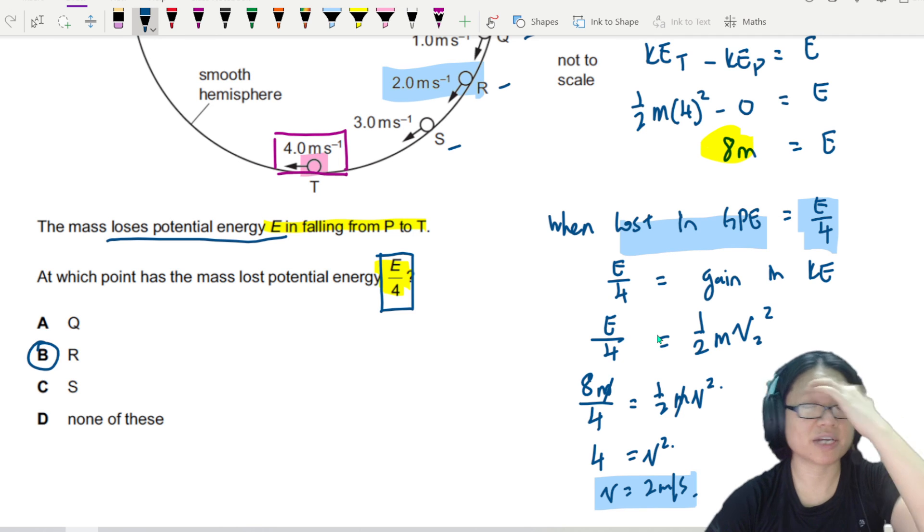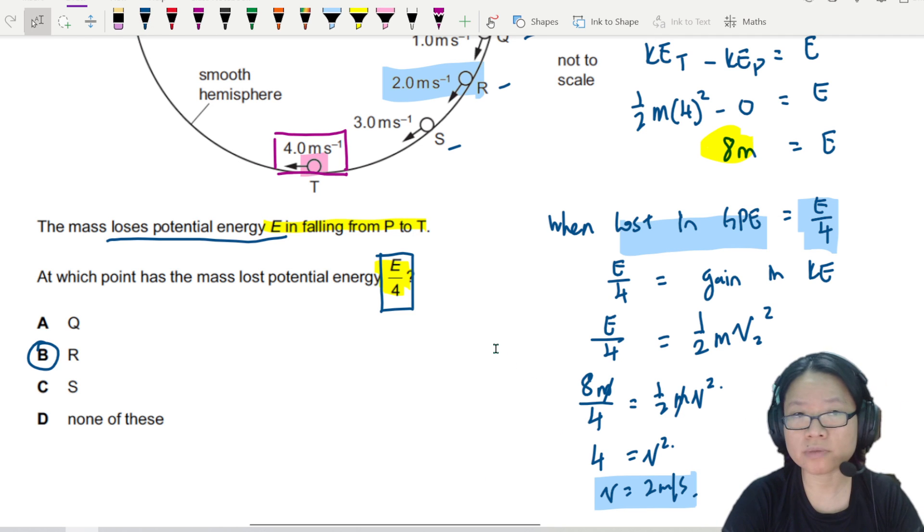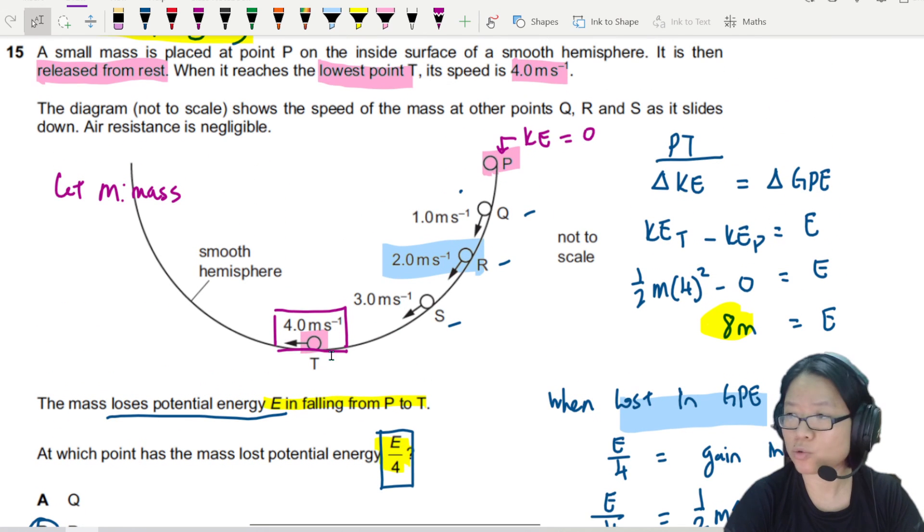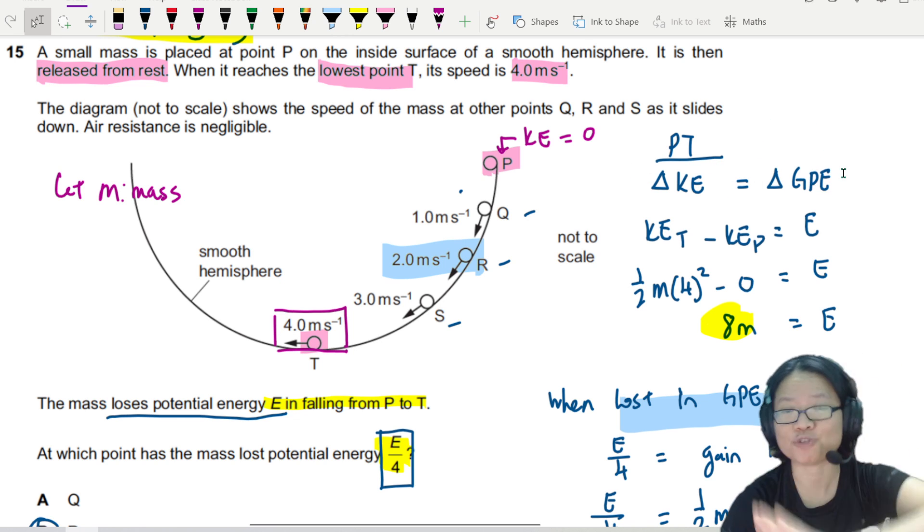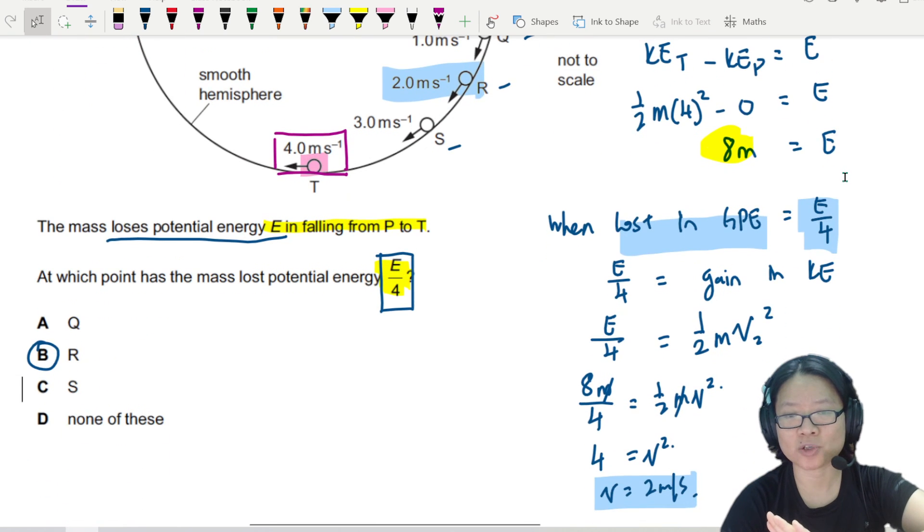Alright. So whenever you have this kind of variable situation, try to use the information that you have. For example, losing potential energy E when you fall from P to T. Once you have that potential energy change, you can equate that to KE. So we are still just playing with the interchange of KE and GPE.